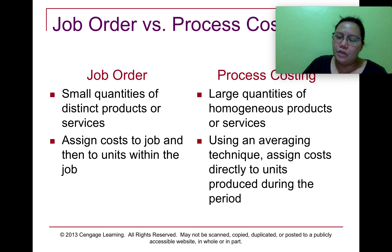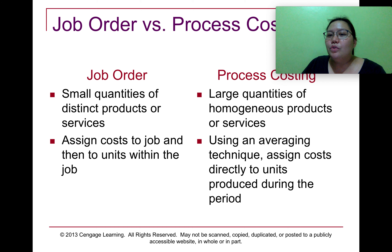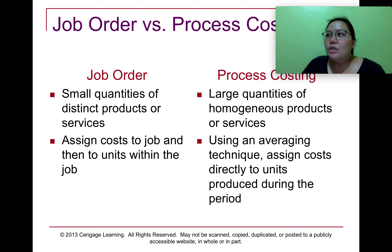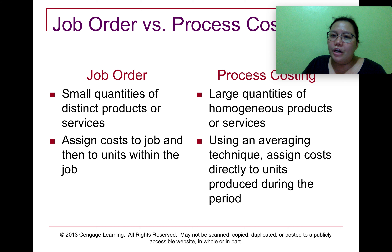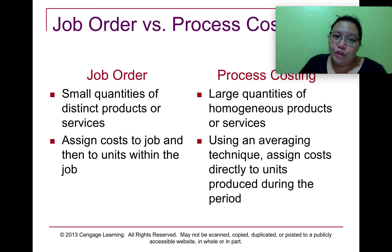For process costing, this is used whenever we manufacture large quantities of homogeneous products and services. When we say homogeneous, these are units that are entirely the same, or if there is customization, very little customization.